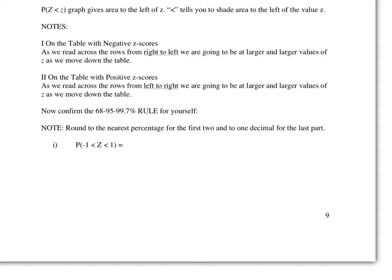Now looking at the table, looking on the next, we call them, we refer to these z's, the little z's, as z scores. So these are the value of little z's, so we call them z scores. And as we read across the rows from right to left, we are going to be at larger and larger values as we move down the table.